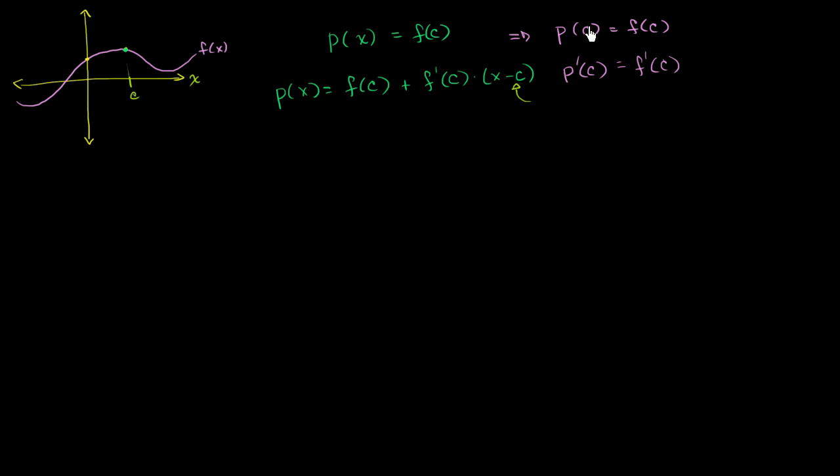And let's think about why we put this, what this minus c is doing. So let's test first of all that we didn't mess up our previous constraint. So let's evaluate this at c. So now we know that p of c is going to be equal to f of c plus f prime of c times c minus c. Well this term right over here is going to be 0. And so this whole term right over here is going to be 0. And so you're just left with p of c equals f of c.